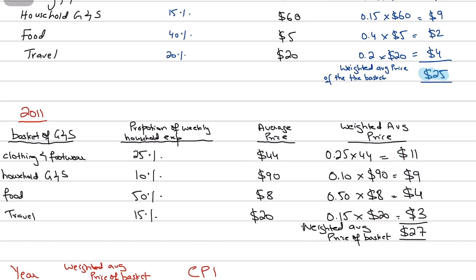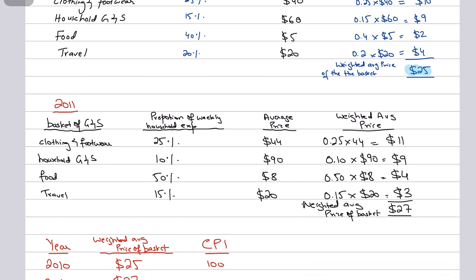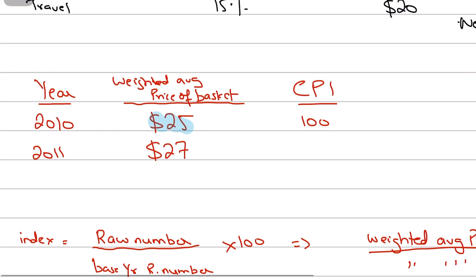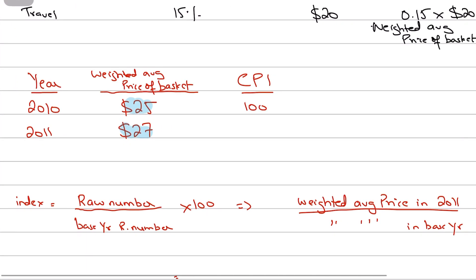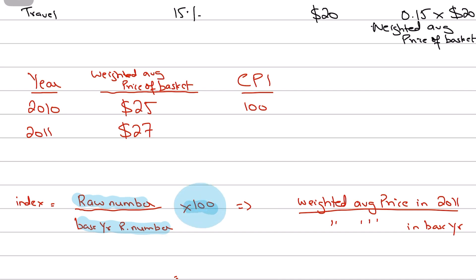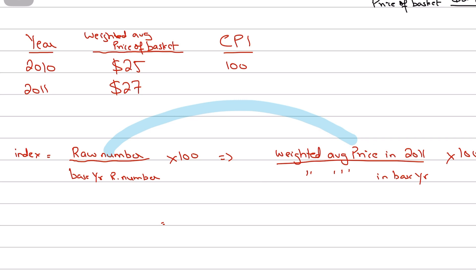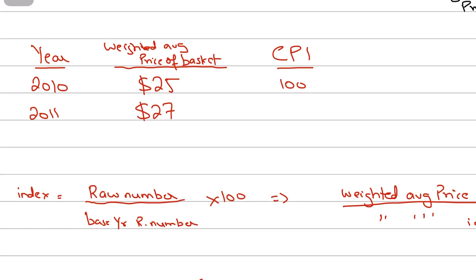The weighted average price of the basket in 2010 was $25 and in 2011 it was $27. We need to convert these consumer prices into a Consumer Price Index — an index form. The formula is: raw number (weighted average price) divided by the base year raw number, times 100. The CPI for the base year always equals 100.